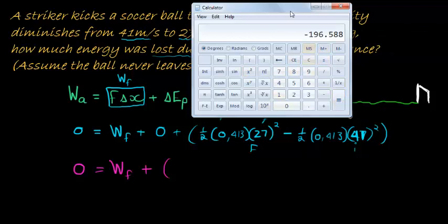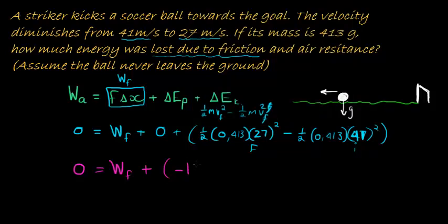What do we get? Negative 196.59. So now, if we add this on both sides, then we've worked out the amount of work that was stolen from the applied work that was done.